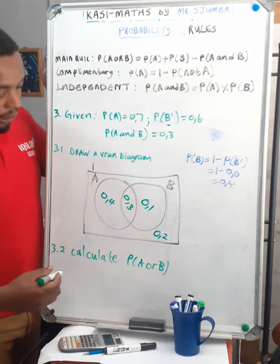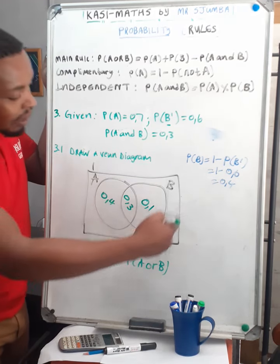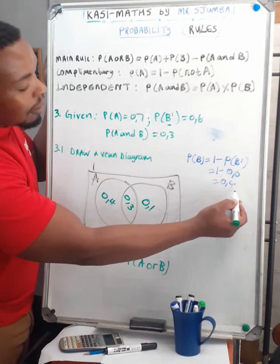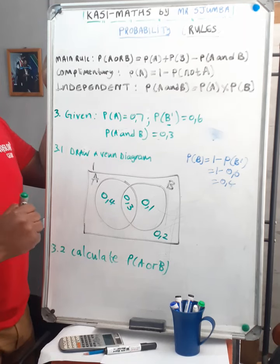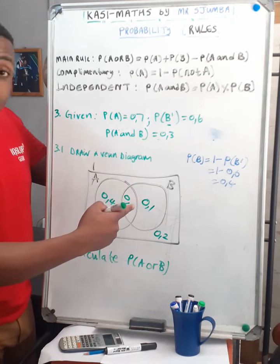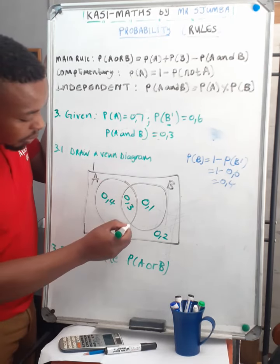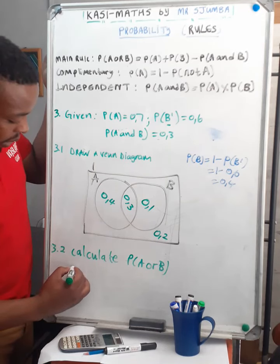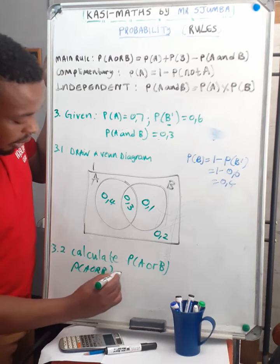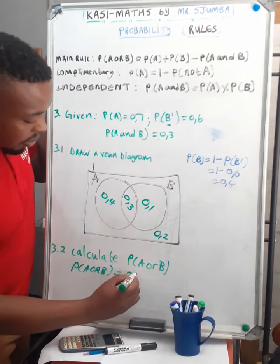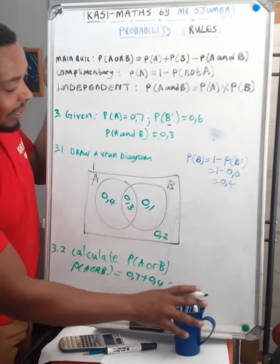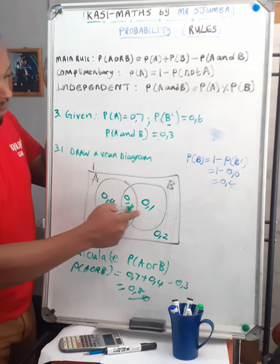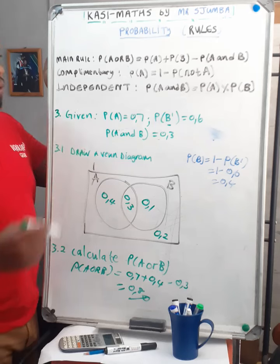To calculate probability of A or B — everything inside A and everything inside B — using the Venn diagram: P(A or B) equals 0.7 plus 0.4 minus the intersection of 0.3, which gives 0.8. We can verify: 0.4 plus 0.3 plus 0.1 plus 0.2 adds up correctly, confirming P(A or B) equals 0.8.